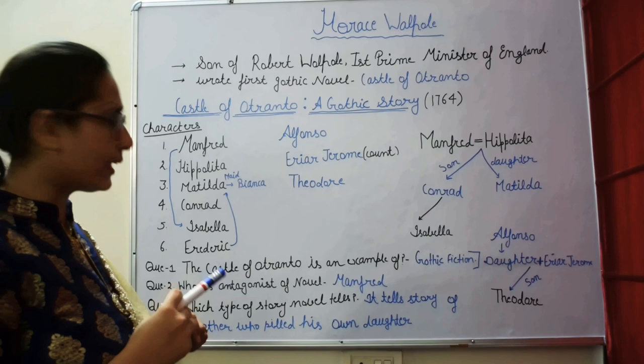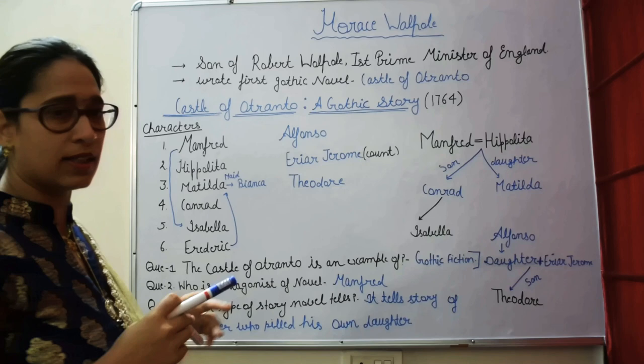Manfred agrees to exchange: he will give Isabella to Frederick and Frederick will give Mathilda to Manfred. This deal concerns the castle and its rightful ownership.